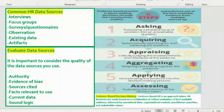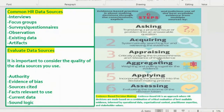In part one, we touched on evidence-based decision-making and talked about the six steps: asking, acquiring, appraising, aggregating, applying, and assessing.